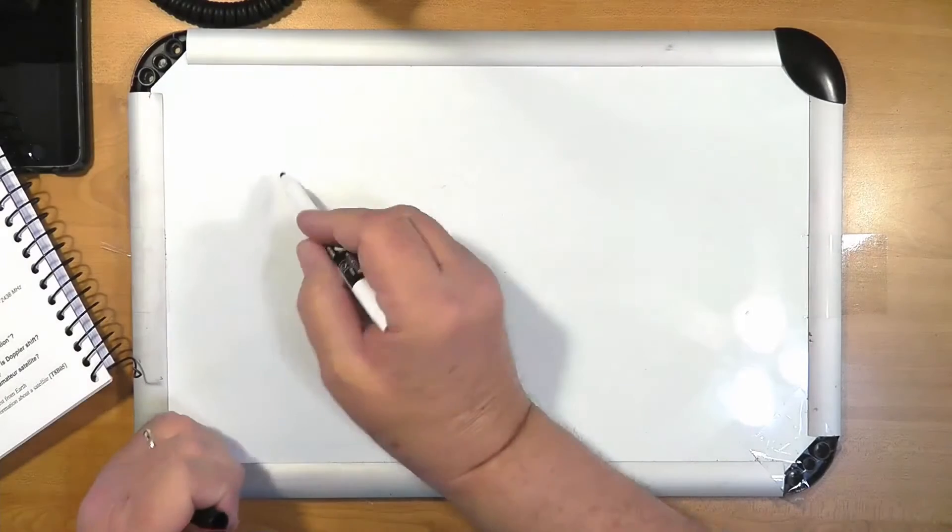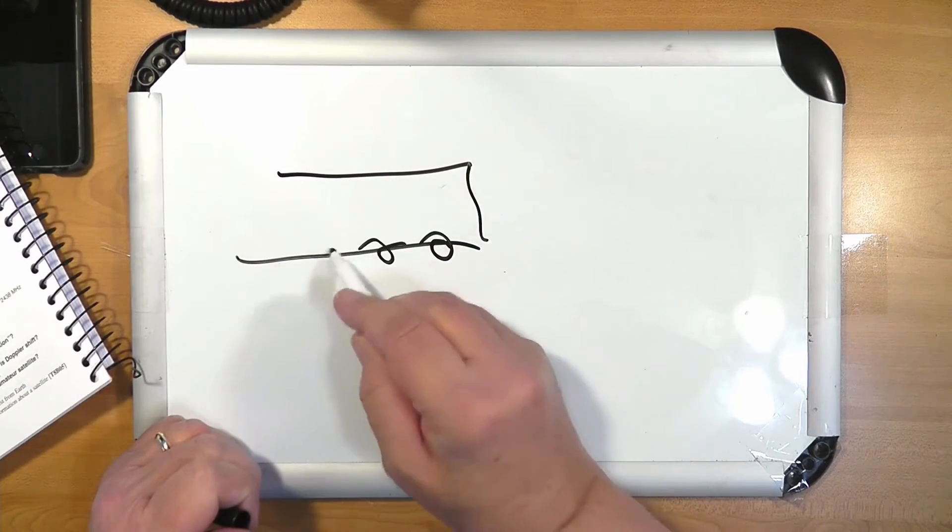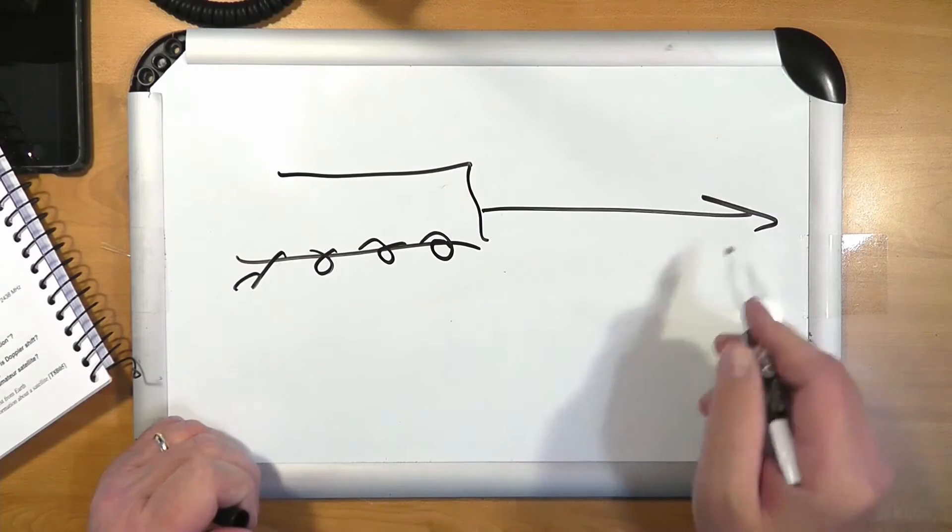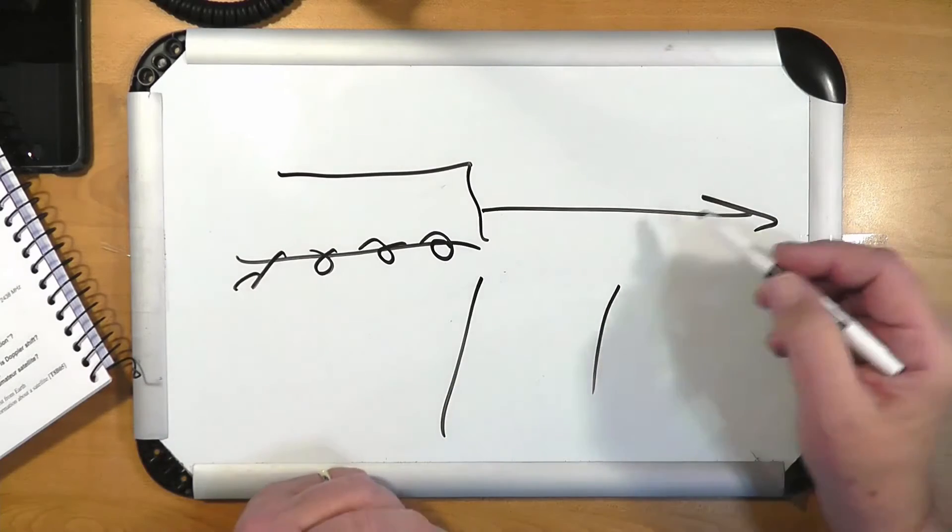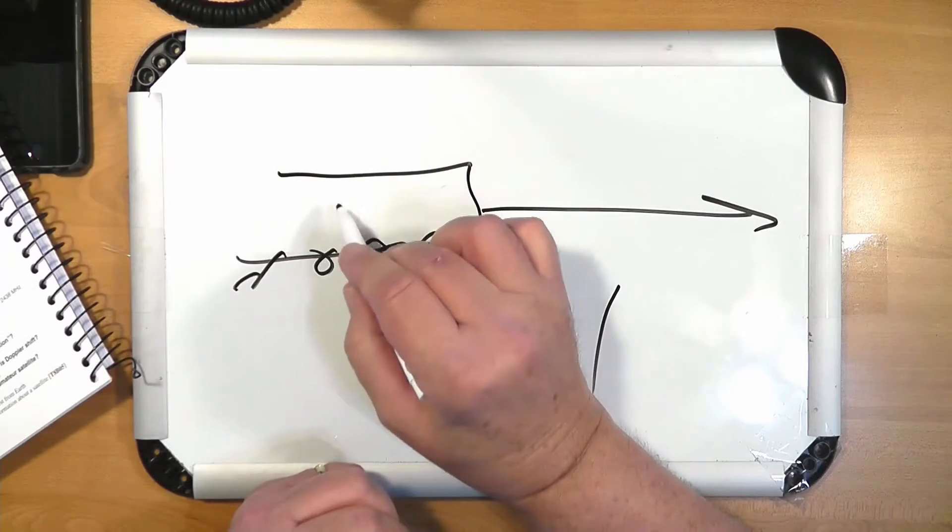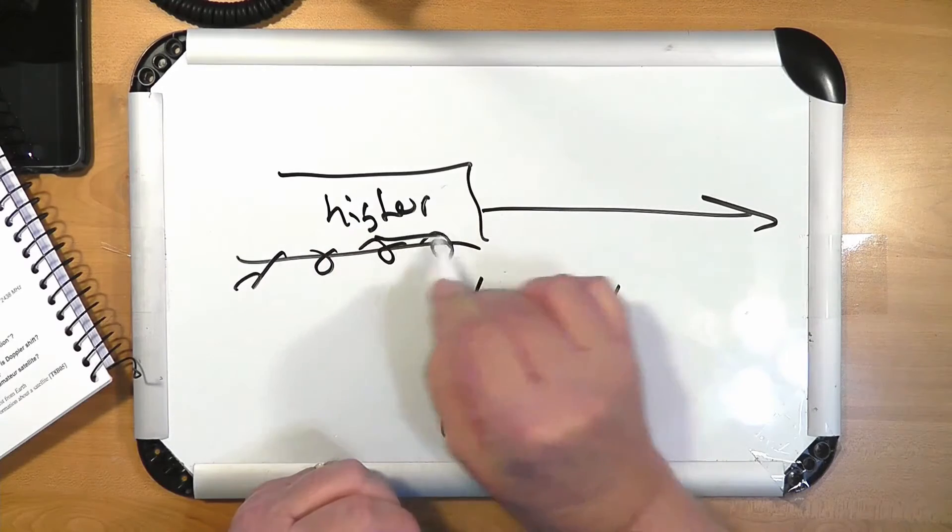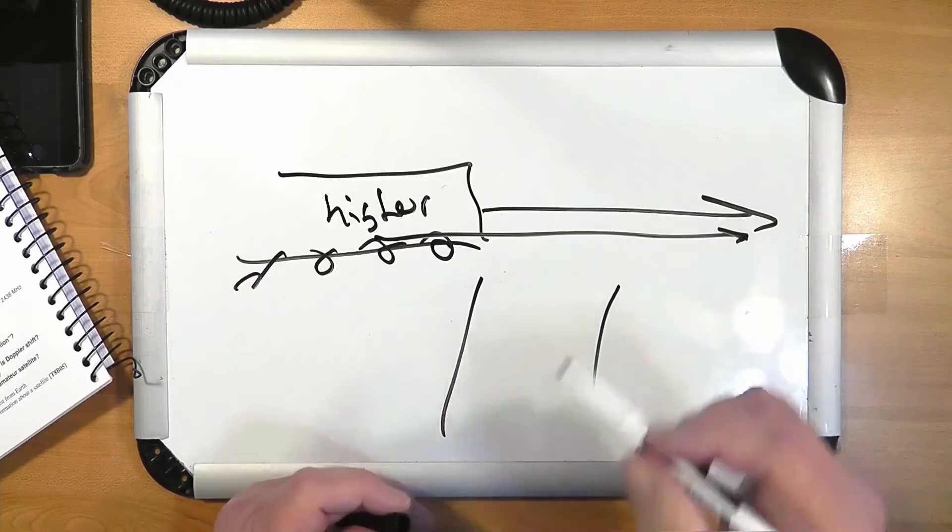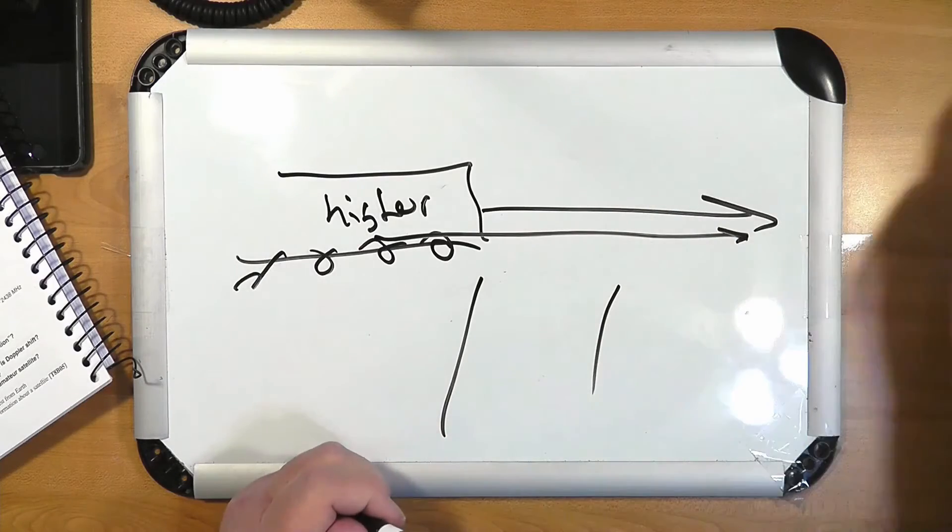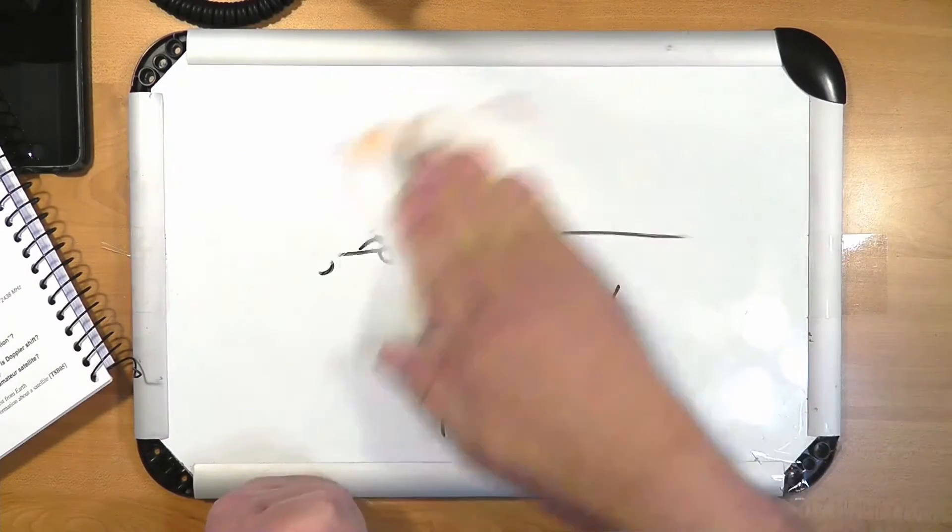Doppler shift is kind of an interesting concept. We're all familiar with the idea of a train going past a crossroads. The horn sounds higher pitch here, and then as it goes by, the pitch of the horn suddenly drops. Everybody's familiar with that concept. It's called a Doppler shift.